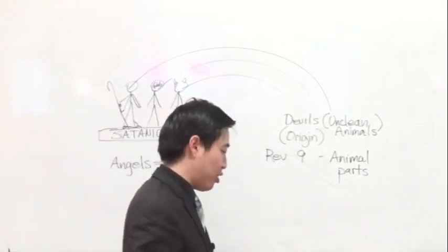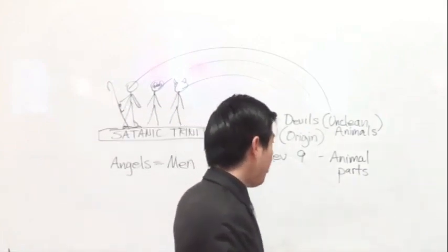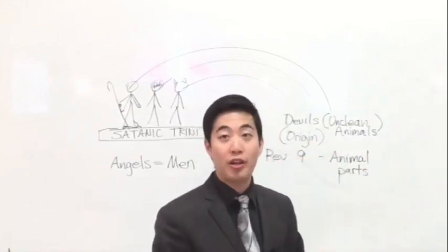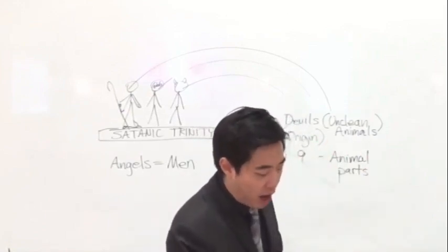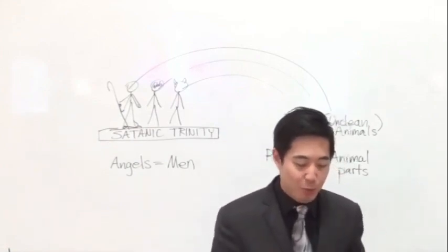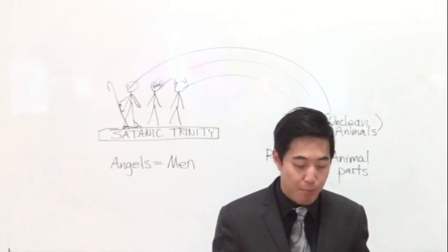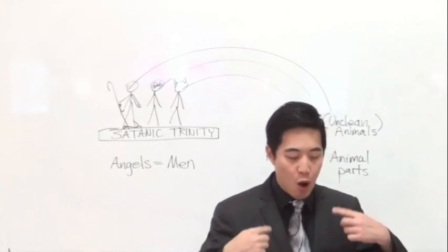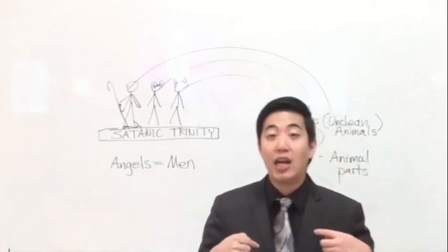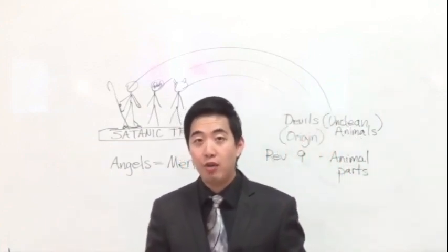So if that's the case, then the question is, then where did these devils, how were they birthed, if they were not originally fallen angels? Well, you see over here how they were born at verse 13. Three unclean spirits, devils like frogs, how were they birthed?